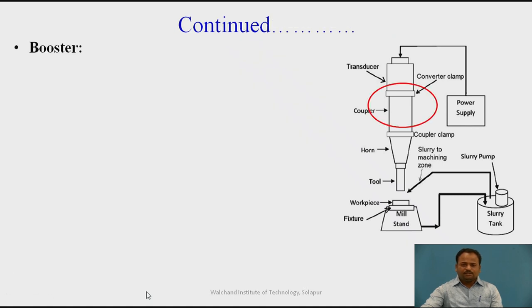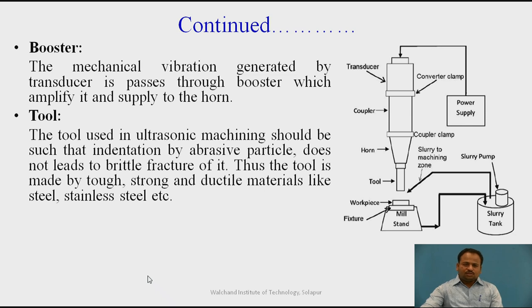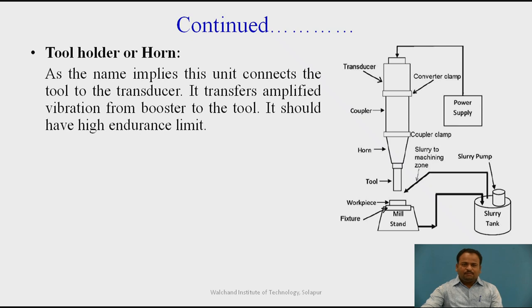Next is the booster. The mechanical vibration generated by the transducer passes through the booster, which amplifies it and supplies it to the horn. The tool used in ultrasonic machining should be such that indentation by an abrasive particle does not lead to brittle fracture of it. Thus, the tool is made of tough, strong, and ductile materials like steel, stainless steel, etc. The tool holder, or horn, connects the tool to the transducer and transfers amplified vibration from the booster to the tool.